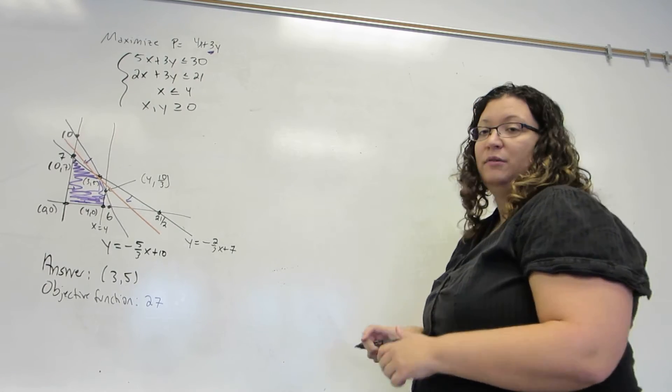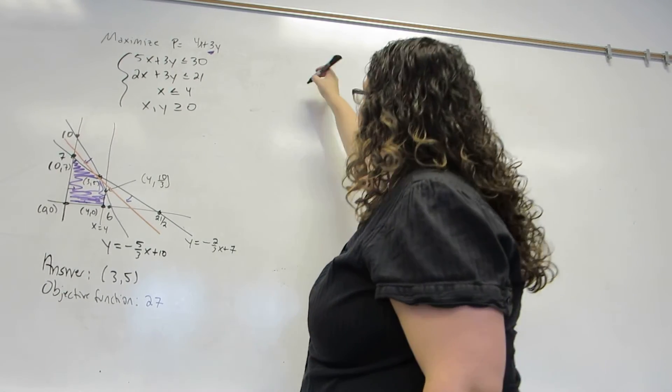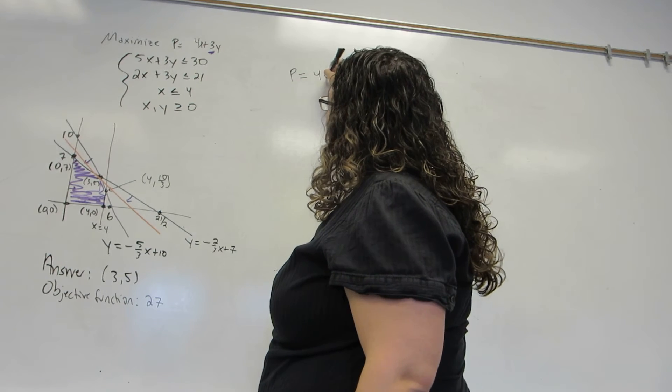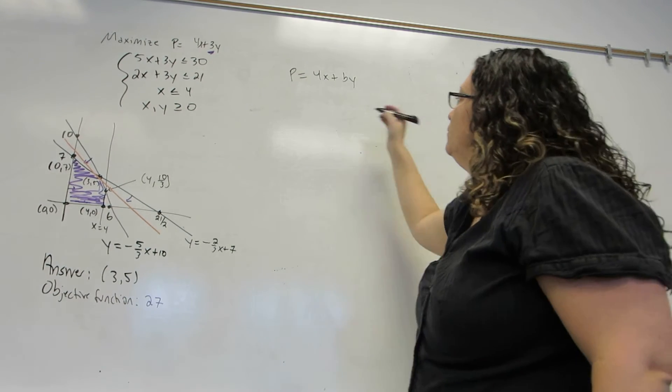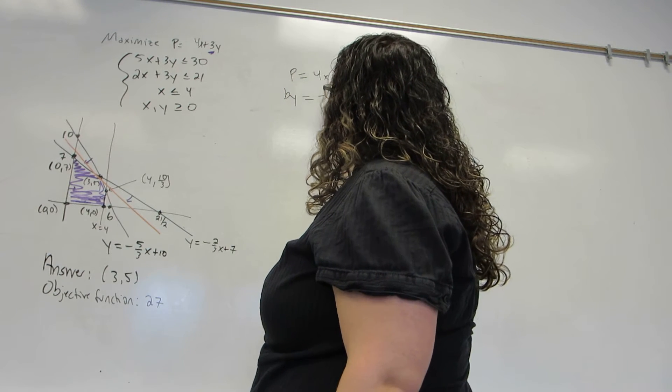I'm going to start very similar to how I did when I was changing the 4. I'm going to put a variable in its place. In this case, I'll use the letter b. Then I'm going to solve this for y so that I can graph it.